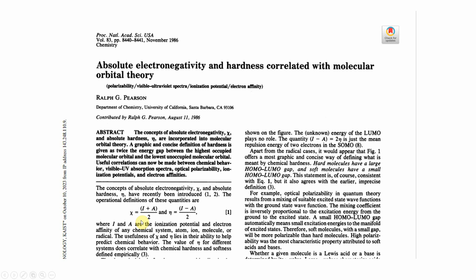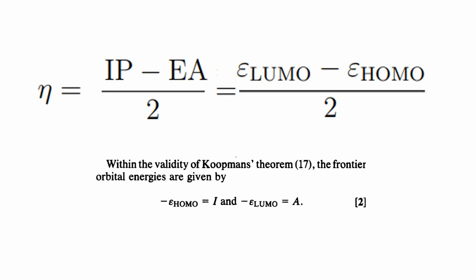You can read this paper and understand the formula easily. Chemical hardness is IP minus EA divided by 2, which equals (E_LUMO - E_HOMO) / 2. This equivalence holds because -E_HOMO equals the ionization potential I, and -E_LUMO equals the electron affinity A. So we can use HOMO and LUMO energies to calculate the chemical hardness of our system.